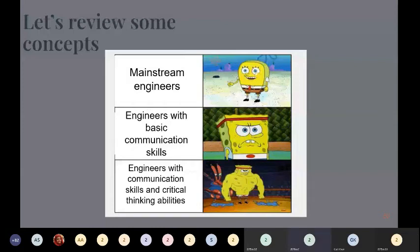To summarize: mainstream engineers are like novice SpongeBob — bookworms who are reluctant to discuss ideas or think differently. Engineers with basic communication skills are better, as they know how to talk, discuss problems, and find solutions. But the smartest engineers on the planet are those with both communication skills and critical thinking abilities.